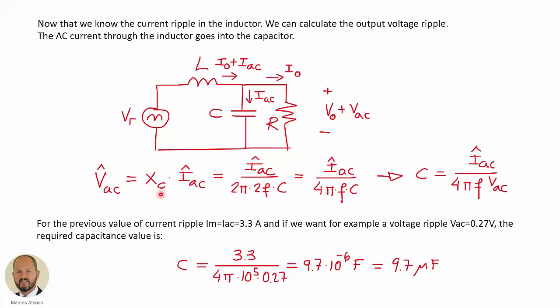This AC current circulating through the capacitor is going to create a peak voltage that can be calculated by multiplying the reactance of the capacitor times the AC current. Substituting the values, we get this final expression for the output voltage ripple, and from it we can calculate the necessary value of the capacitance.